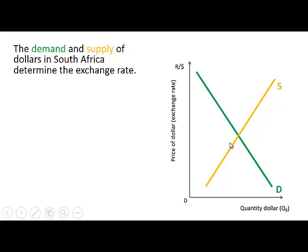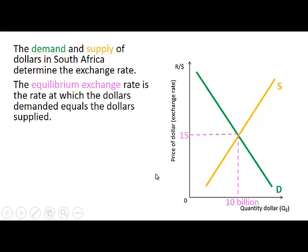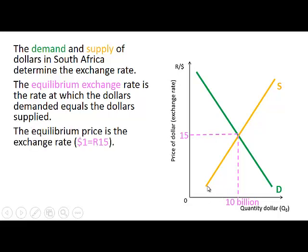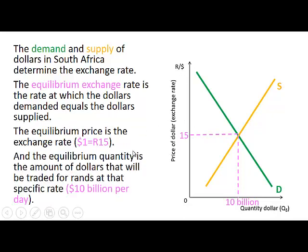The demand and supply of dollars in South Africa determine the exchange rate. The equilibrium exchange rate is the rate at which the dollars demanded equals the dollars supplied. In this case the equilibrium price, which is the exchange rate, is one dollar equal to 15 Rand, or 15 Rand equal to one dollar. The equilibrium quantity is the amount of dollars traded for Rand at that specific rate — in this case 10 billion dollars per day.